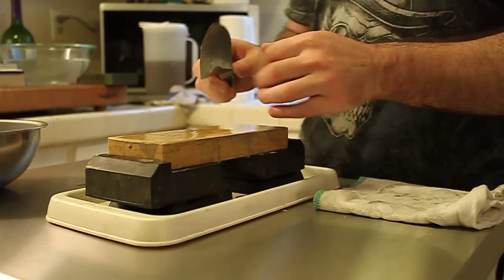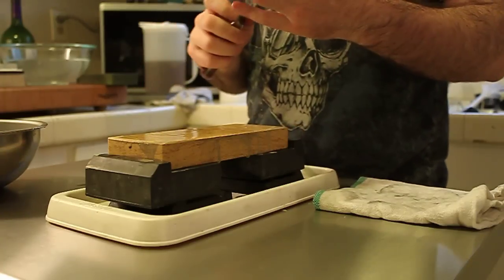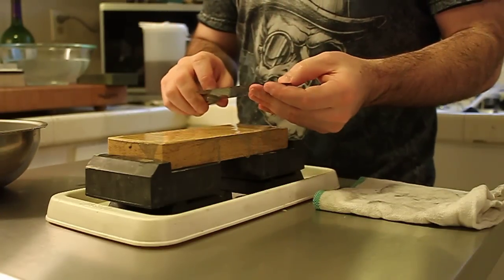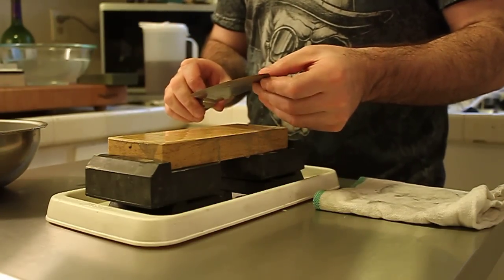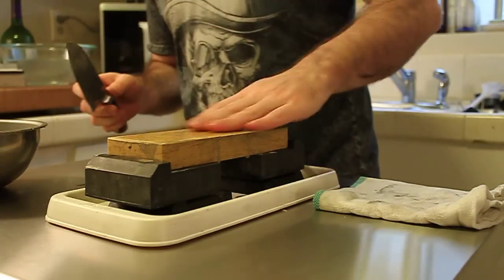Once you've developed a burr on both sides of the knife, you'll notice that there's still kind of a floppy piece of metal there at the end of your knife. And so you want to get rid of this. And so what we're going to do to do that is get a micro bevel on here.